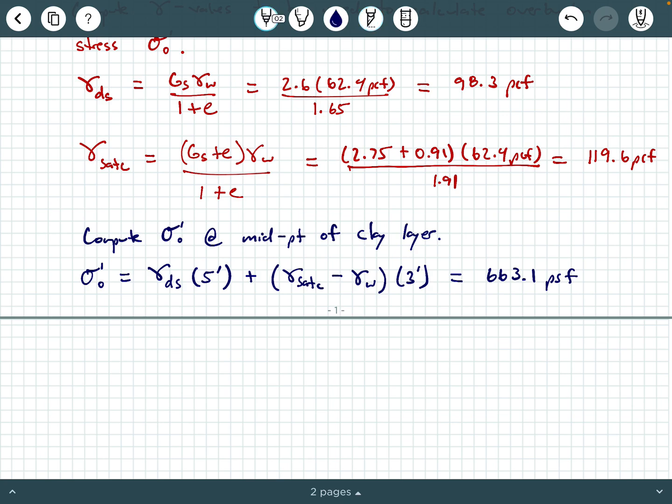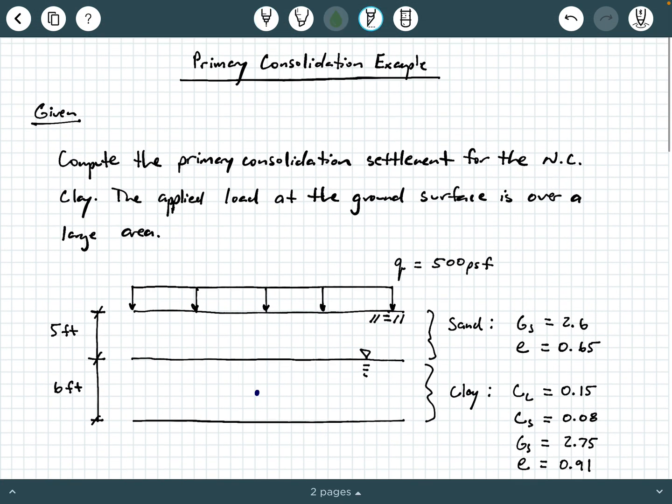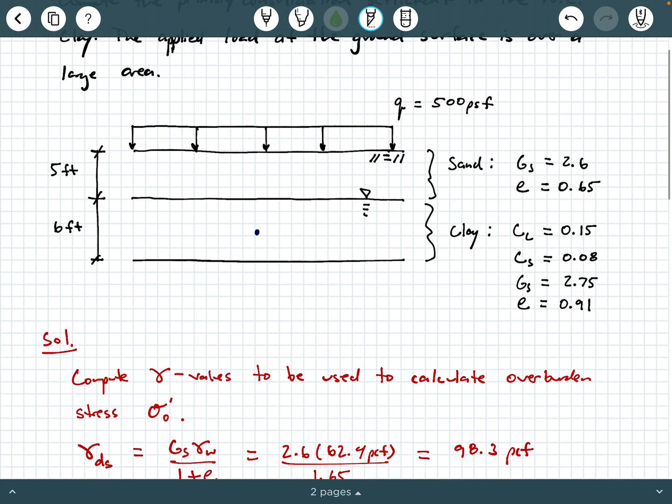Now we're about to do the consolidation calculation. So the problem statement said this is a normally consolidated clay layer, an NC clay. So if you recall from your consolidation knowledge, we are not going to utilize C sub S. We do not need C sub S at all. I mean, we have it, but we don't need it. What we really need is C sub C.